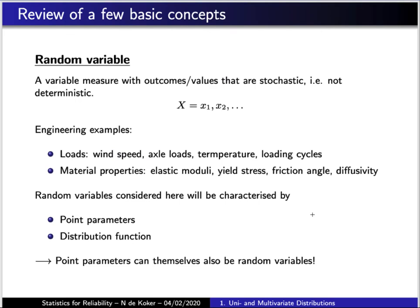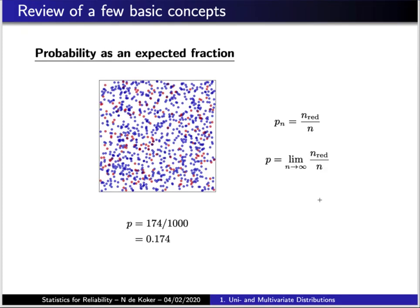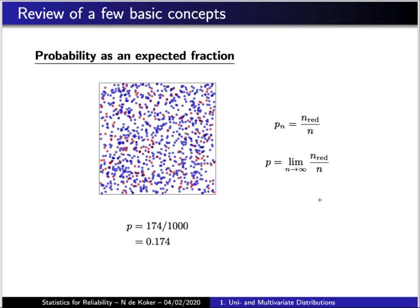Any time one has a physical process which generates an outcome, and that outcome will not necessarily be exactly the same every time the process is repeated, one has a stochastic process and one can characterize the outcome through a random variable. The example we used of picking a ball at random can be considered a random process, and the color of the ball can be considered a random variable.